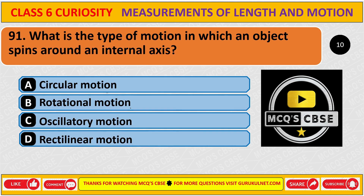What is the type of motion in which an object spins around an internal axis? The correct answer is D, rotational motion.